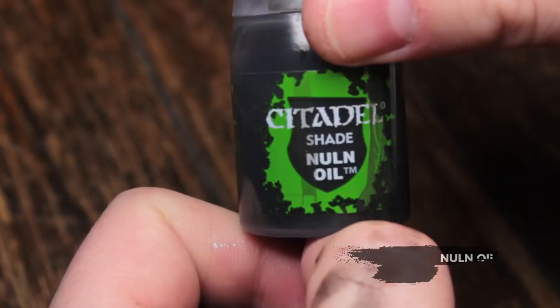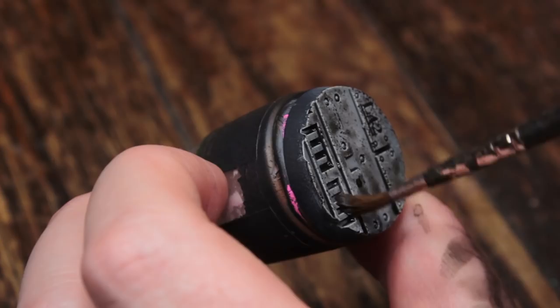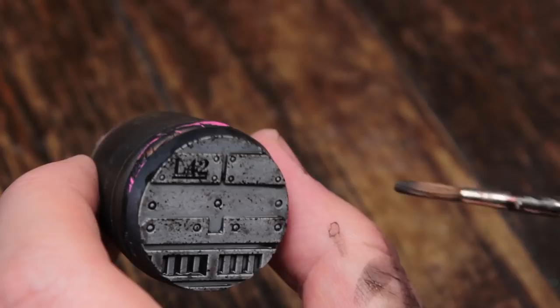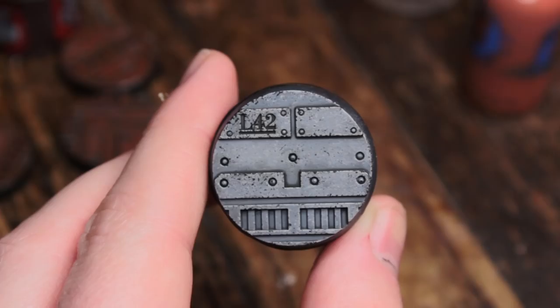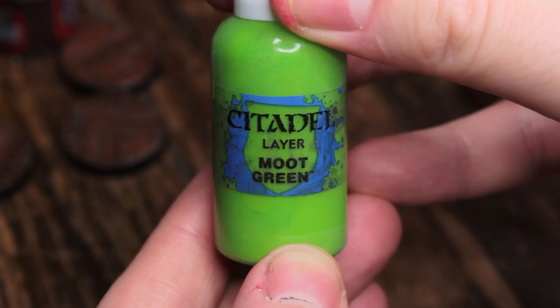Now we're going to wash the whole base with Nuln Oil. I'm going to use a slightly damp brush here to just wick away the excess on the flat surfaces where I don't want it to pool too much or stain the paint. It's important to do this while your wash is still wet, because once it starts drying, you'll get tide marks and you won't be able to undo this. So you've got to work quickly here. Once it's dry, it should look like this.